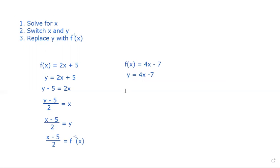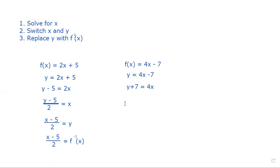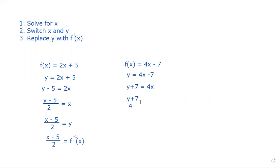Now we're going to do the same thing. Step one: solve for x. To get x by itself, we need to add seven to both sides, giving us y plus seven equals 4x. Next, to get x by itself, we divide both sides by four, giving us (y plus 7) divided by 4 equals x.